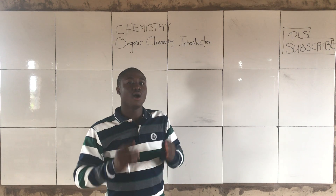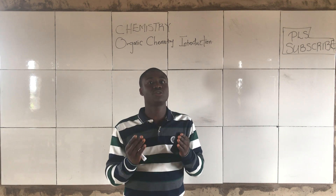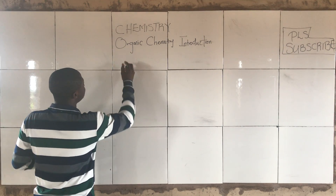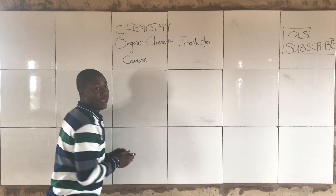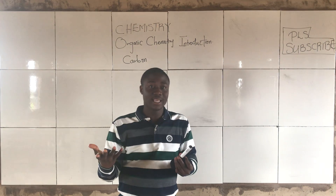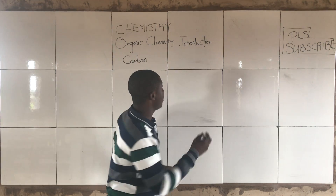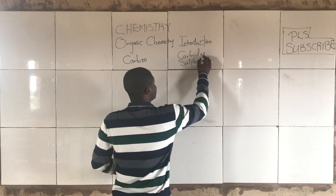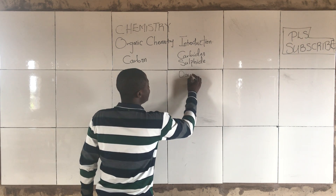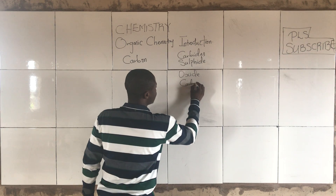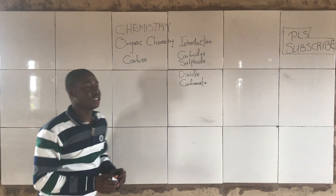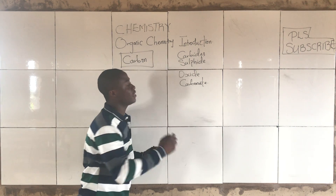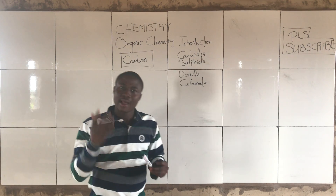Now, what is organic chemistry? Organic chemistry is simply the chemistry that deals with the study of carbon, with the exception of their carbides, their sulfides, their oxides, and also their carbonates.